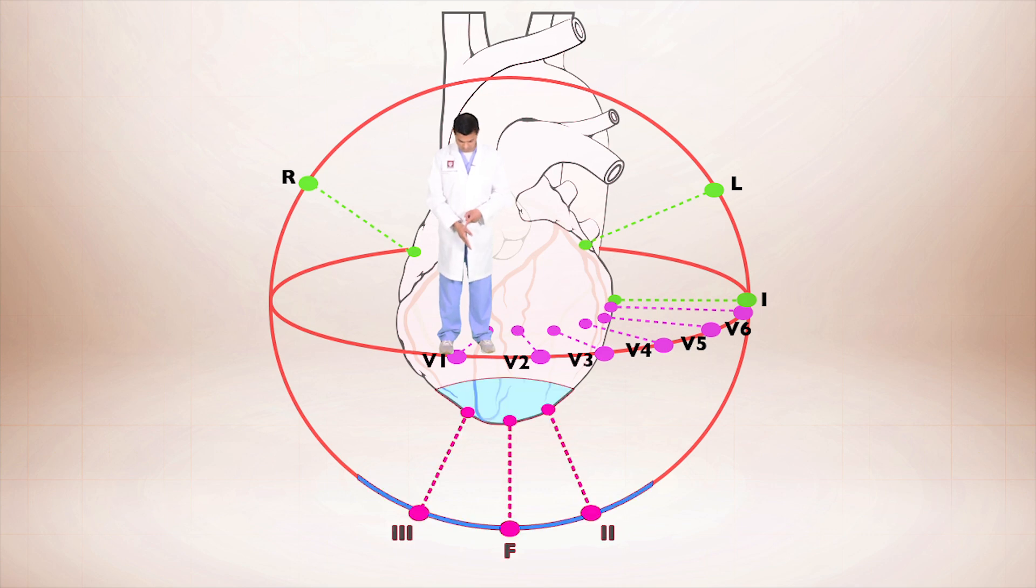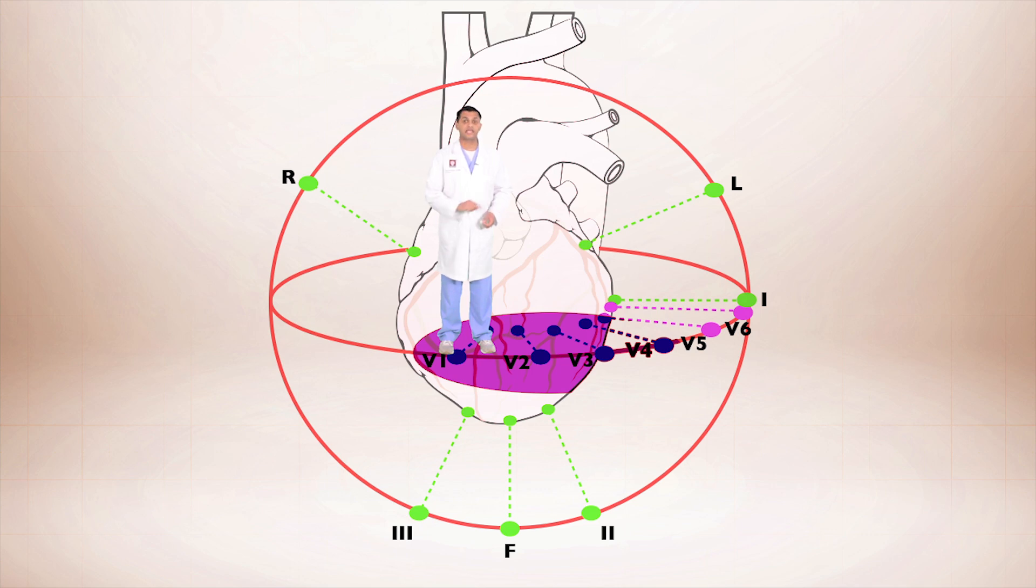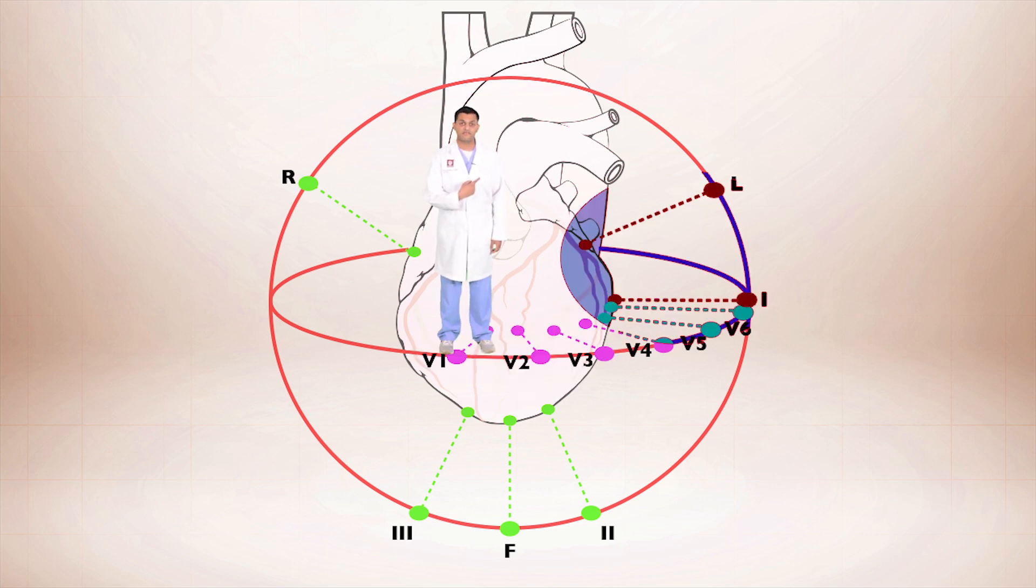So we have 2, 3, and AVF that are looking at the inferior portion. We have V1 through V4 that's looking at the anterior portion of the heart. And then on this side of me, we have V5, V6, and one in AVL. They're looking at the lateral portion of the heart.